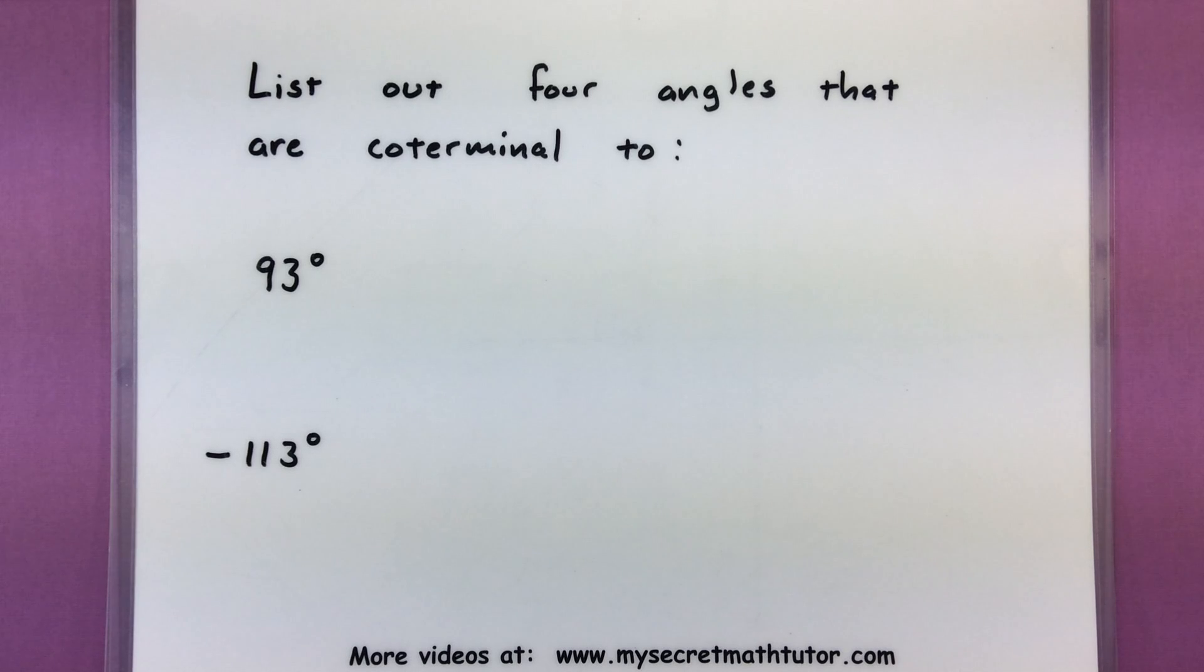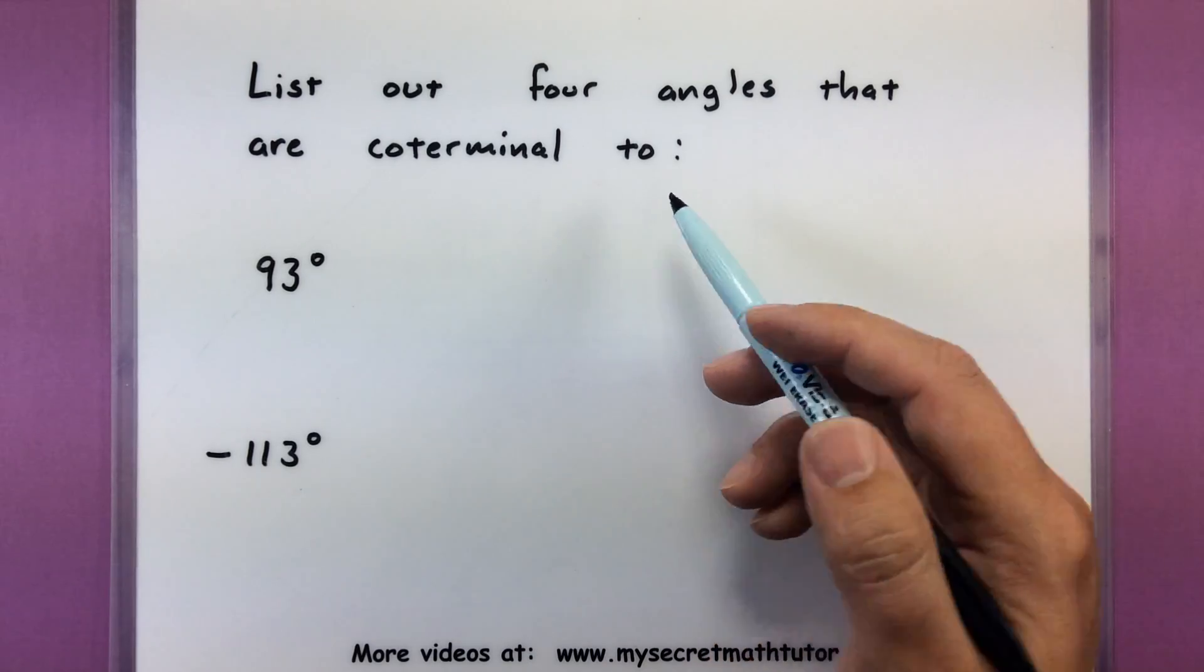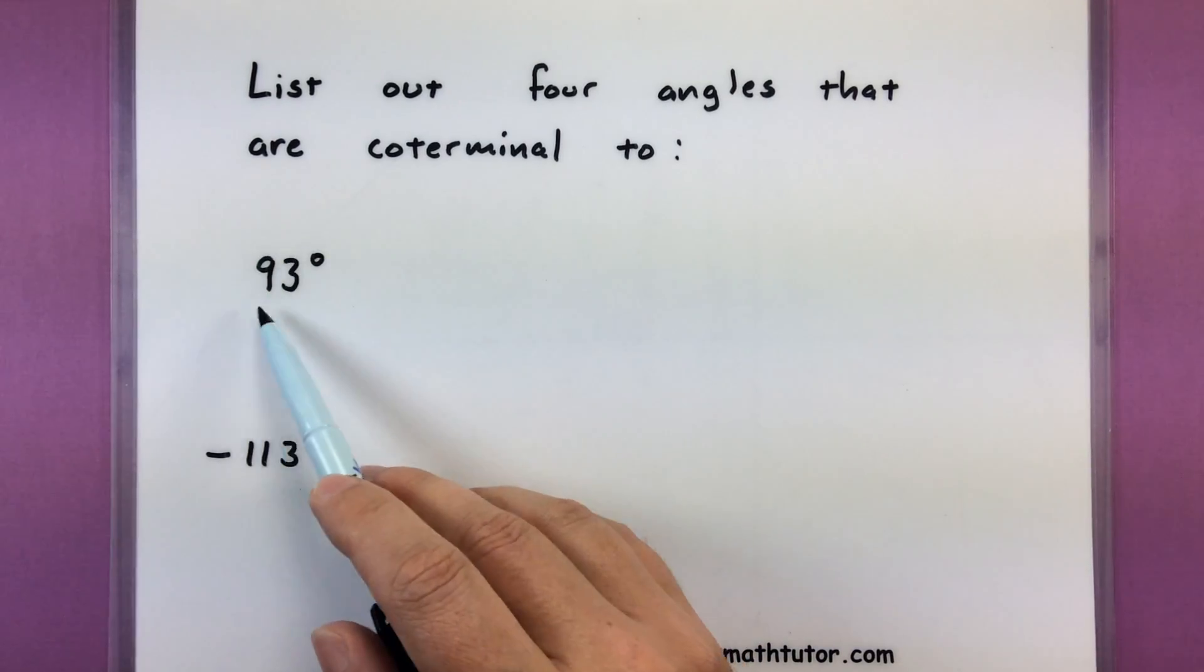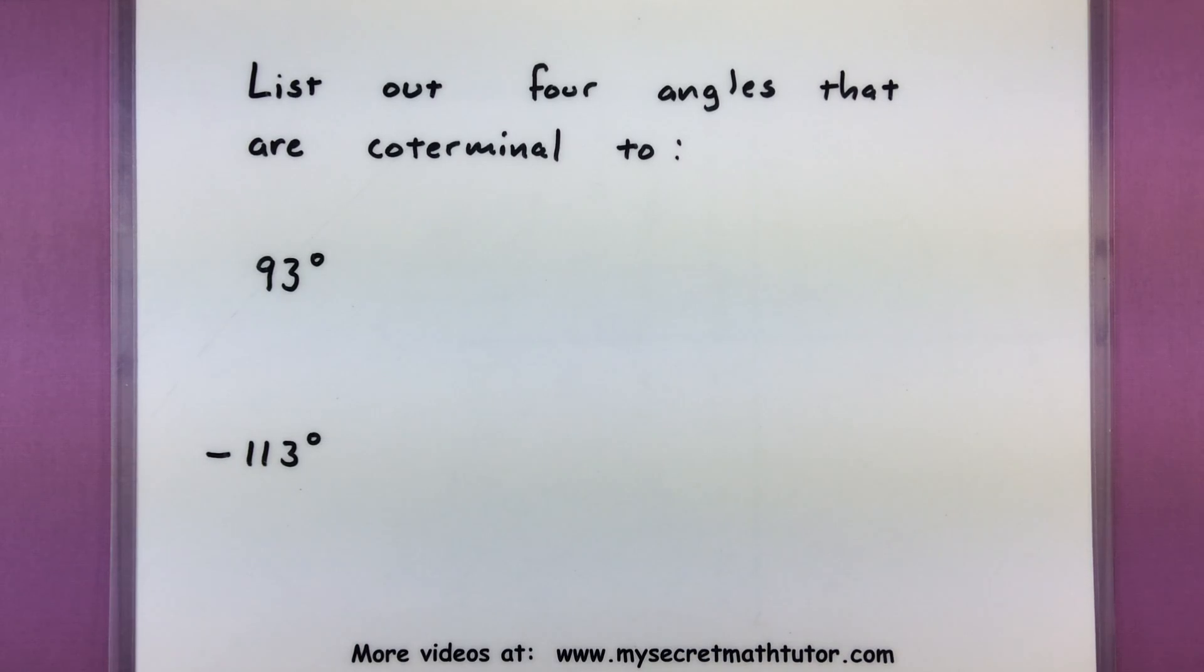Now one thing I want to emphasize is that there really are lots and lots of coterminal angles. In this next bunch of examples, we'll list out four coterminal angles that are coterminal to whatever we're given. And I'll go ahead and pick two that are positive and two that are negative, just so you can see that you can go either direction with this.